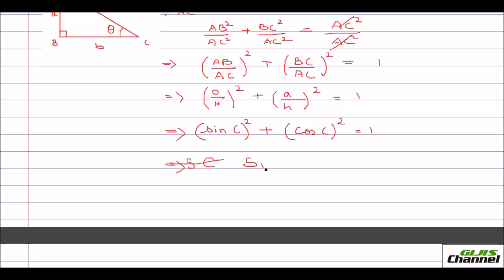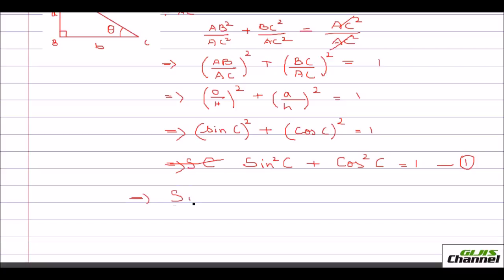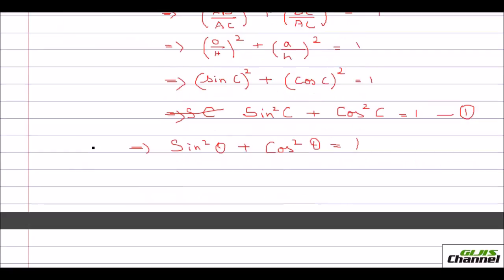So we arrive at sin²C + cos²C = 1. This is the first trigonometric identity. I can generalize it by saying sin²θ + cos²θ = 1. From this identity I can derive two more.